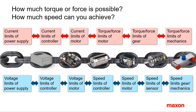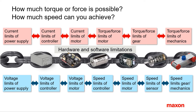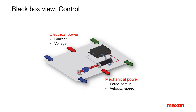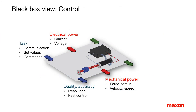The voltage capabilities of controller and power supply might not be sufficient to reach the required speed. Observe that there are constraints imposed by the hardware or by the software. The second black box aspect is control: what is the motion task — positioning, speed, or force control?